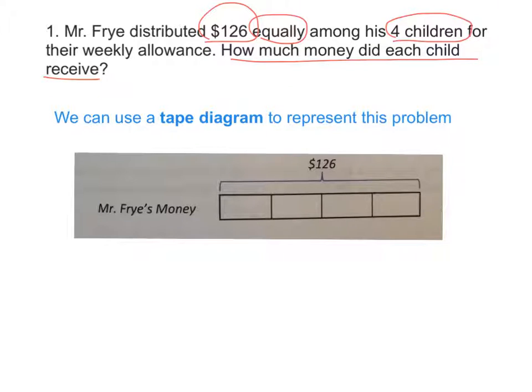Now that we know that we're trying to figure out how much money each child received and that he shared his $126 equally amongst four children, let's use a tape diagram. I want everyone to draw this in your problem set so you have an example of how a tape diagram looks.